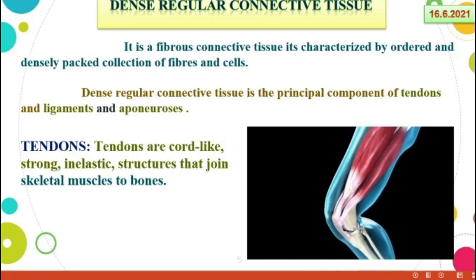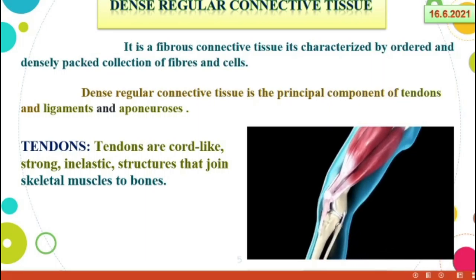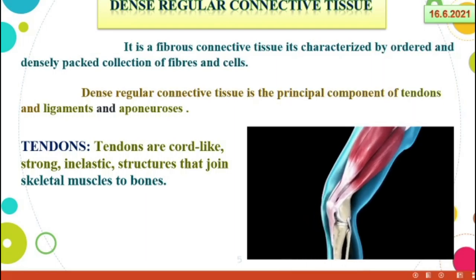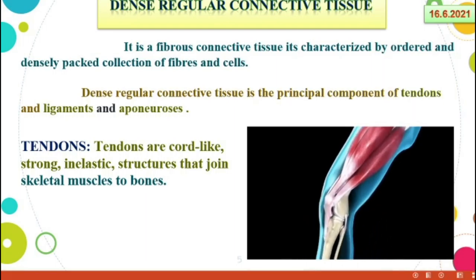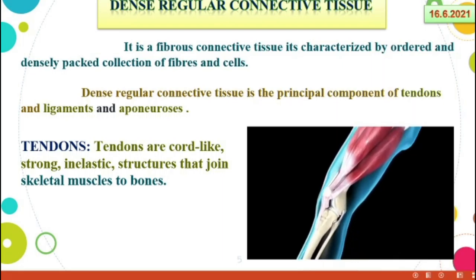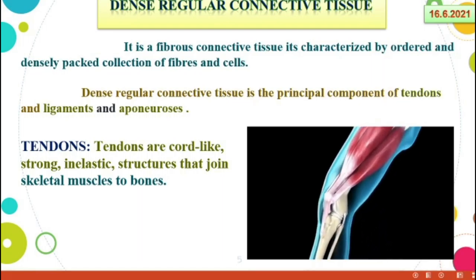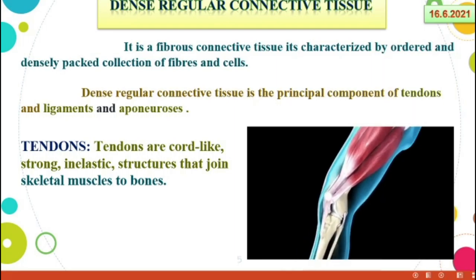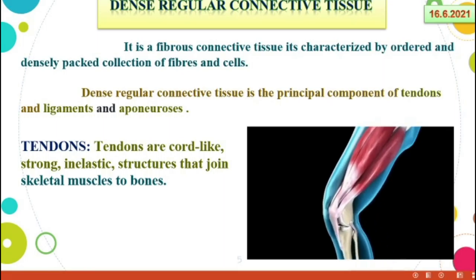First one: tendons. Tendons are strong, inelastic structures that join skeletal muscles to bones. They are cord-like in nature, very strong and inelastic structures. The skeletal muscle is attached along with the muscle to connect to the bone — this is called tendons.